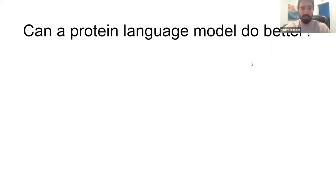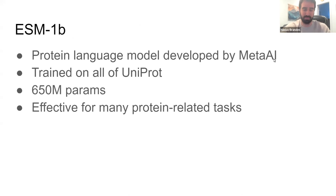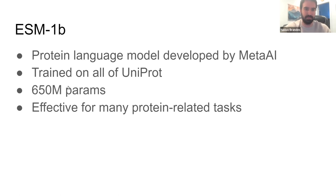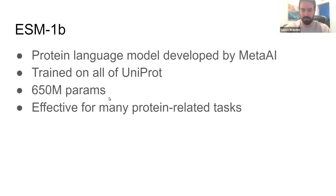This brings us back to the question: can a protein language model do better? In this work, we used ESM1B, a protein language model developed by Meta AI, trained on all protein sequences in UniProt. It's a 650-million-parameter model — not considered super large by today's NLP standards, but at the high end for protein sequence models. It has been shown to be effective for many protein-related tasks, from structure prediction to post-translational modification to detecting homologues.